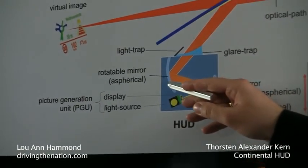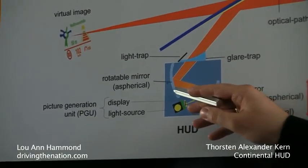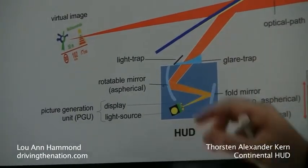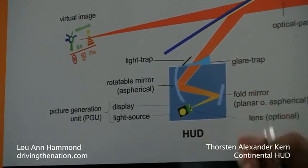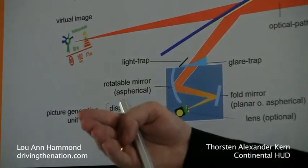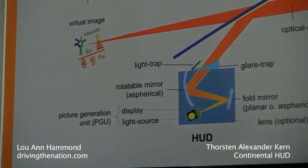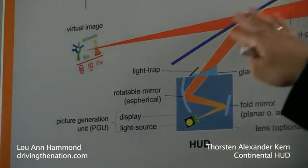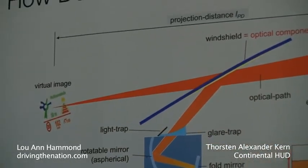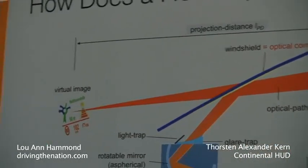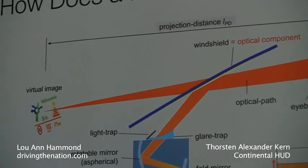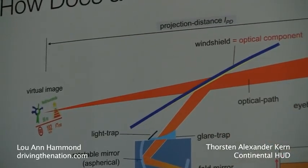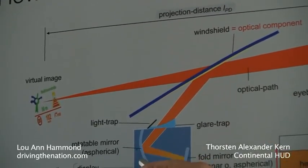This rotatable mirror does several things. First of all, it does the magnification, because we magnify the image to get a certain projection distance of the virtual image. In addition, it corrects for distortions from the windshield. The windshield is bended and it's usually a very designed bend, so this has to be compensated to get, in the end, a correct angular image again. This is done by that mirror.